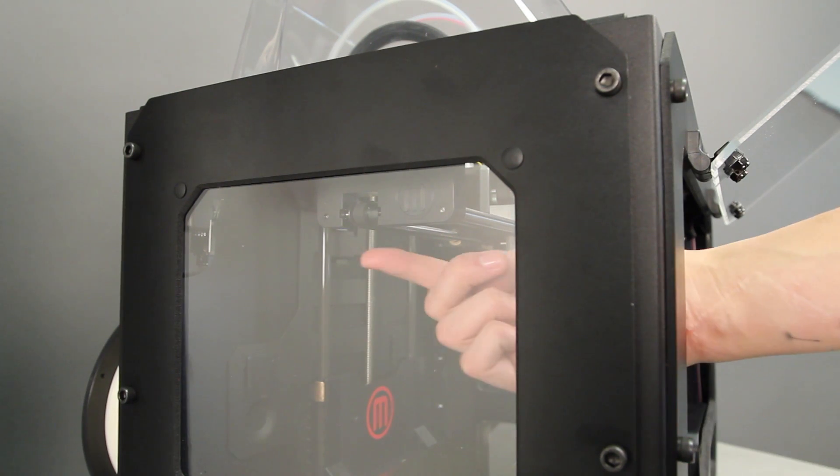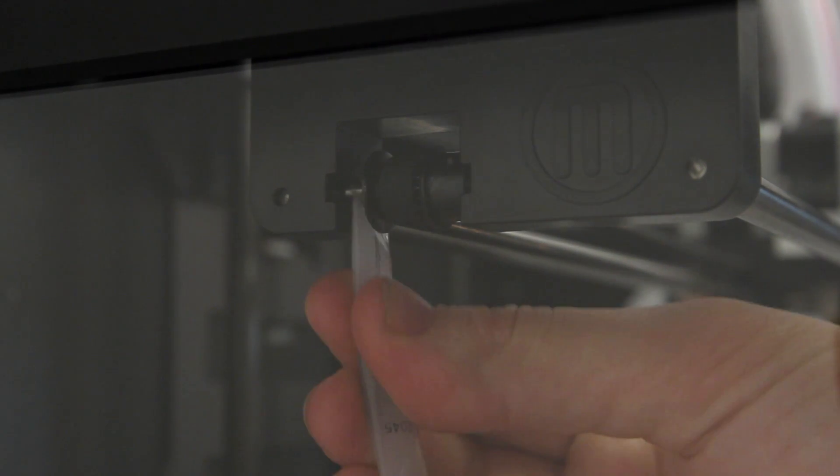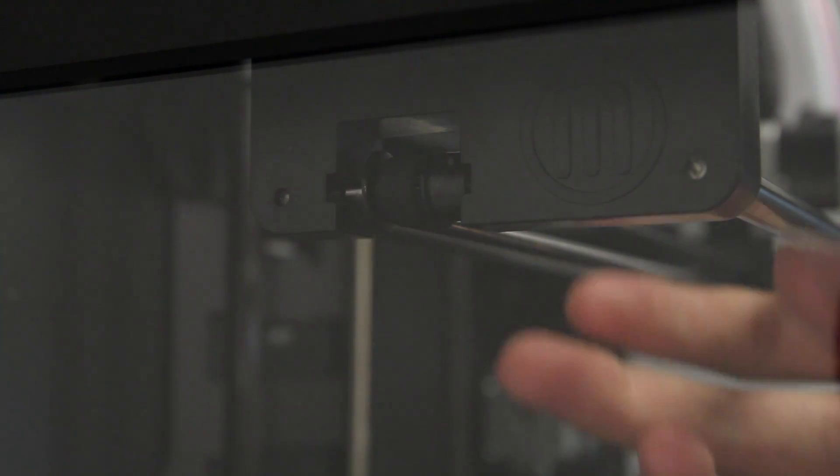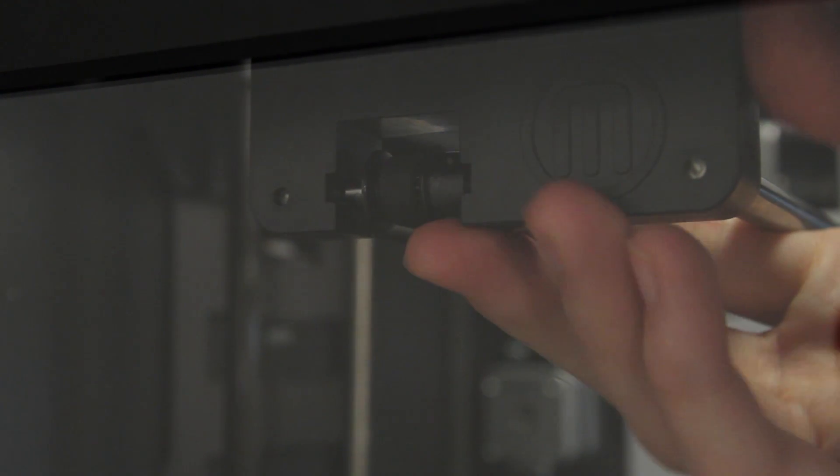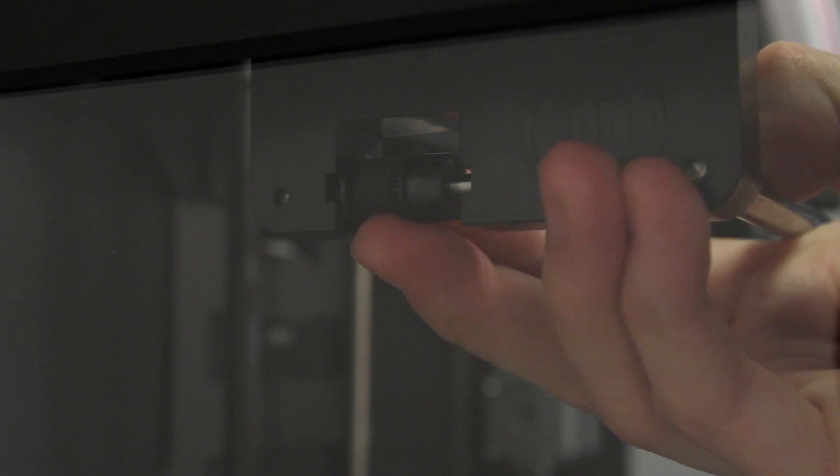The x-axis idler pulley is located here on the left side of your machine. Squeeze a small amount of the PTFE based grease directly onto the tiny bit of exposed shaft here and move the pulley back and forth to spread it around.